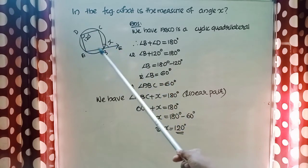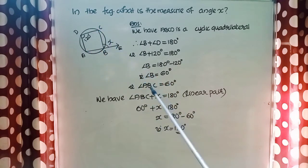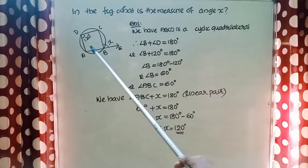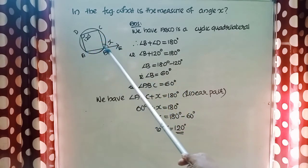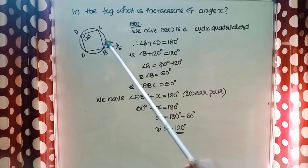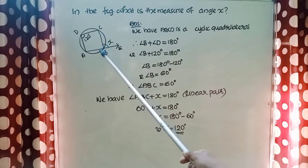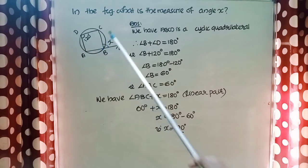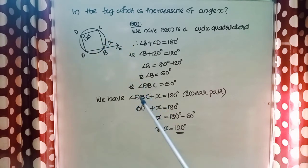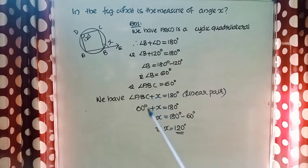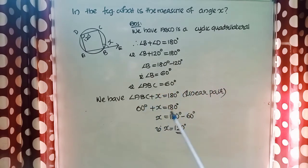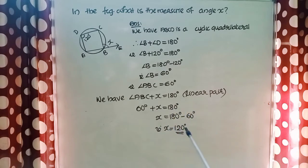Angle B means its full name is angle ABC, so we have angle ABC equal to 60 degrees. Now looking at the figure again, the sum of angle ABC and X is 180 degrees because they form a linear pair. So 60 degrees plus X equals 180 degrees, giving X equal to 120 degrees.